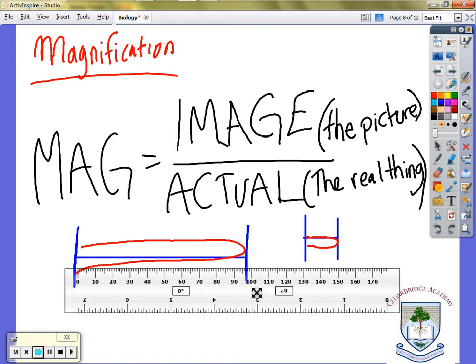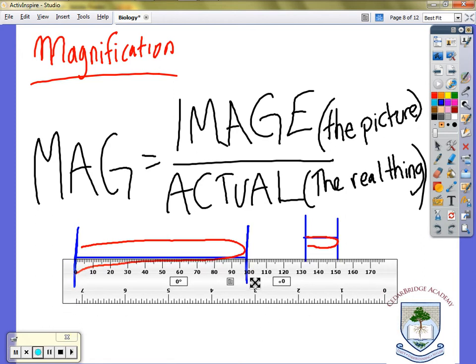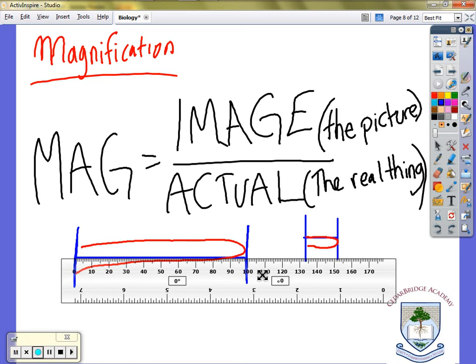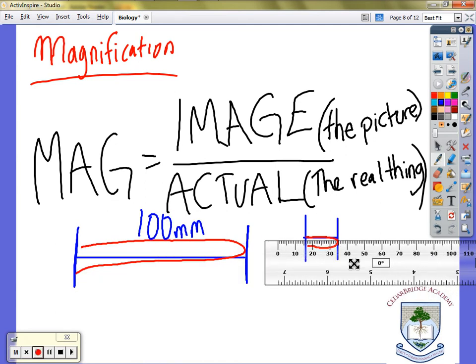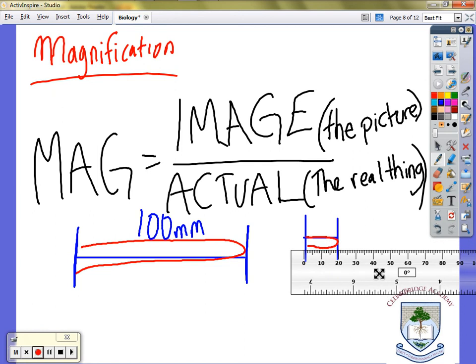So what you do is you measure these two things. My first line is 100 millimeters, good, nice number 100 millimeters and my second line is, what's that, 10, 15, 18 millimeters.